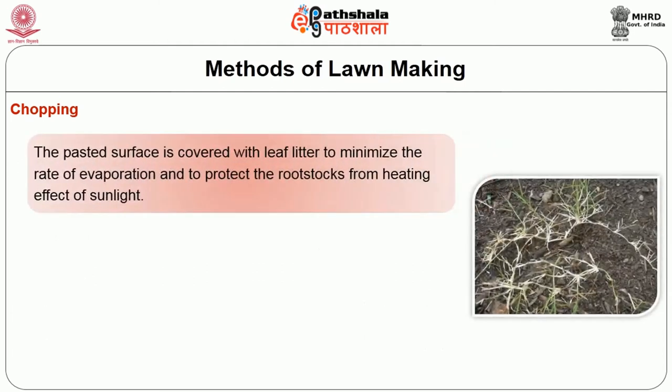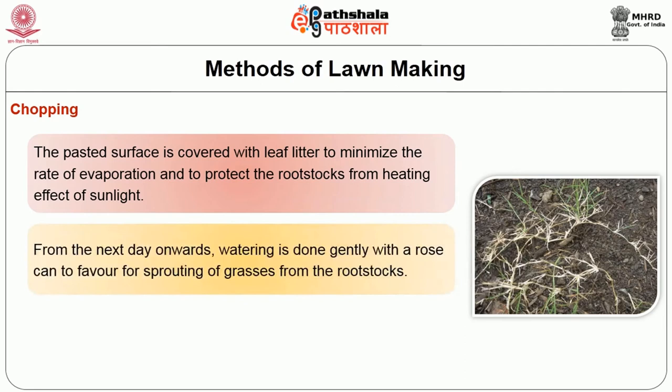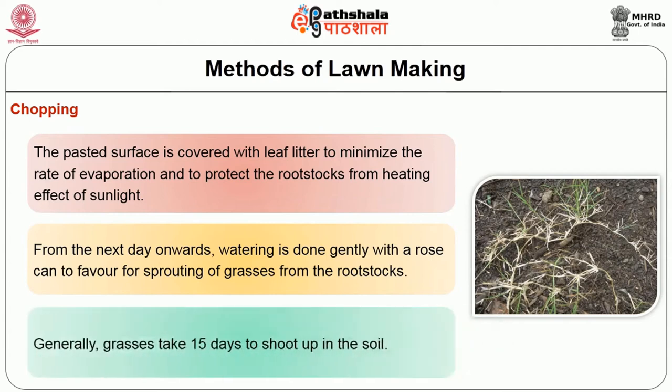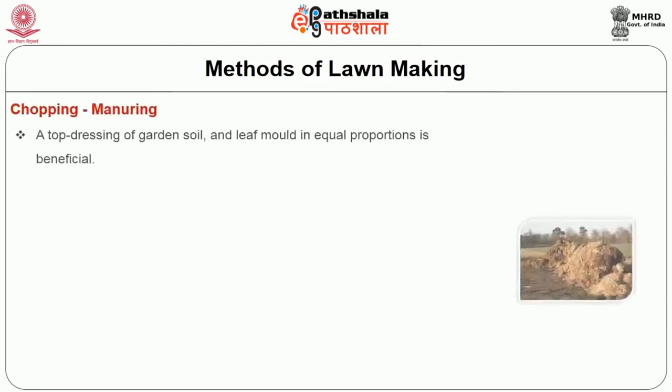The pasted surface is covered with leaf litter to minimize the rate of evaporation and to protect the root stalks from the heating effect of sunlight. From the next day onwards, watering is done gently with the rose can to favor sprouting of grasses from the root stalks. Generally, grasses take 15 days to root in the soil. Then manuring.